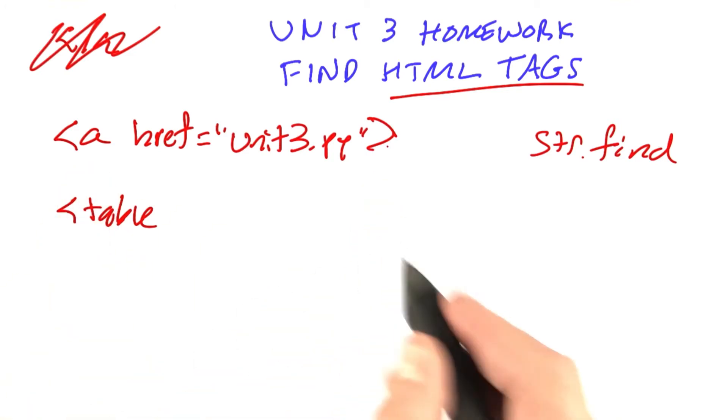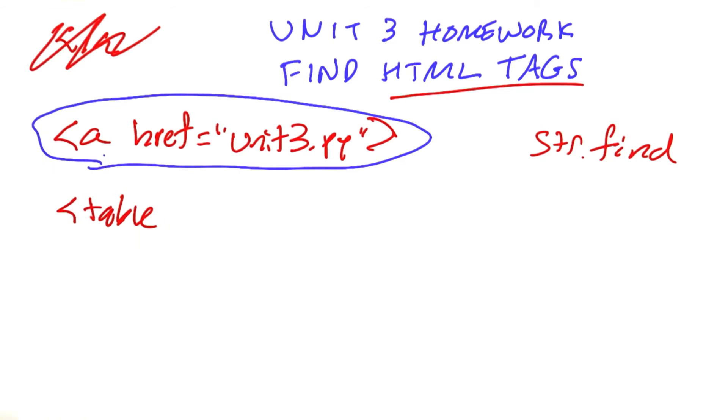We're looking to find all the instances that look like that, this whole thing: angle bracket, tag, optional set of parameters, parameter equal, string.